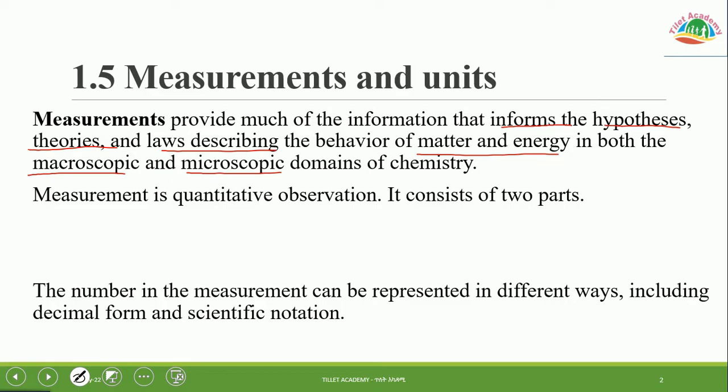In chemistry, the macroscopic domain refers to big objects that have a large magnitude, while the microscopic domain refers to objects which have a small magnitude — at the atomic level, the molecule level, and the ion level.